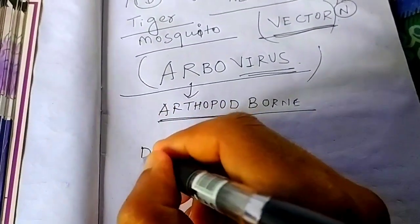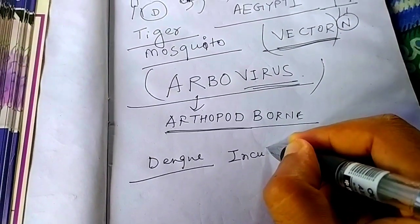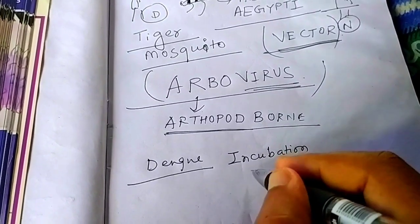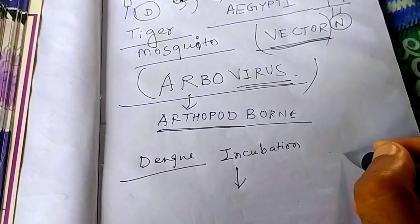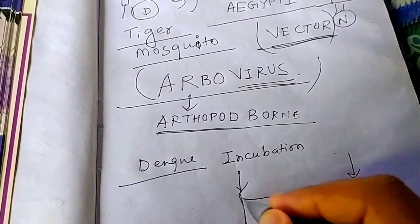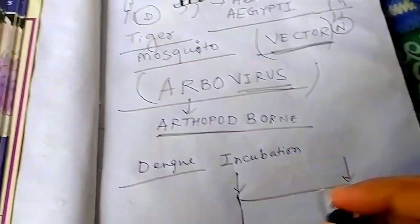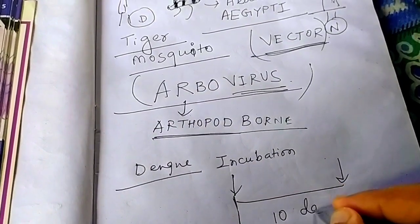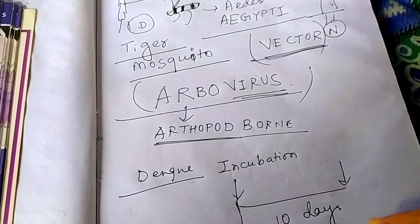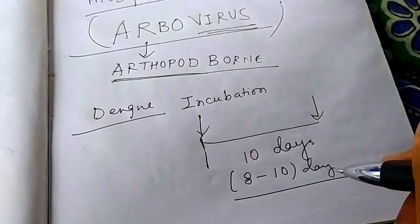Basically Dengue has an incubation period. What do you mean by incubation period? The virus has entered the body and the appearance of symptom — between these is the incubation period. This incubation period is 10 days. Some books write it as 8 to 10 days. Remember, 8 to 10 days is the incubation period of this virus.